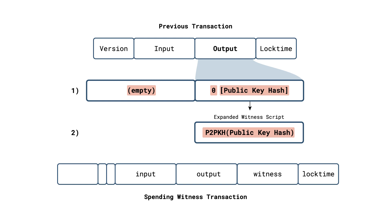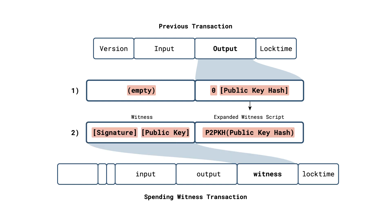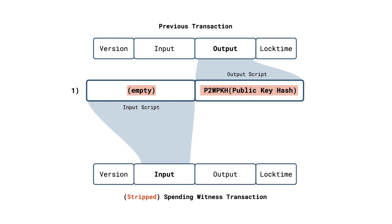This happens in a separate step. In this second step, a witness-aware script machine will recognize an empty input script and witness script pattern and initiate a separate script run. In this evaluation, the pay-to-witness pubkey hash script is expanded to the well-known pay-to-pubkey hash script. Now the witness data and resulting pay-to-pubkey hash script can be validated, just like the spending of a regular pay-to-pubkey hash output. In the case of an older non-witness-aware script machine or node, the second step is necessarily omitted, and the validation can still be successful without checking signatures. This is what makes Segregated Witness a soft fork-compatible upgrade.